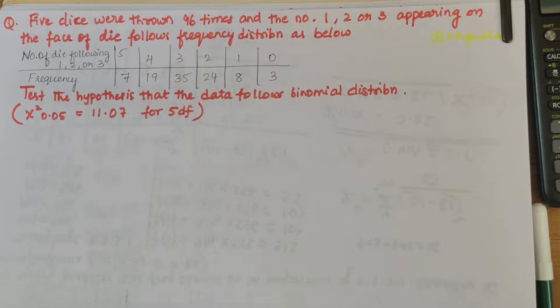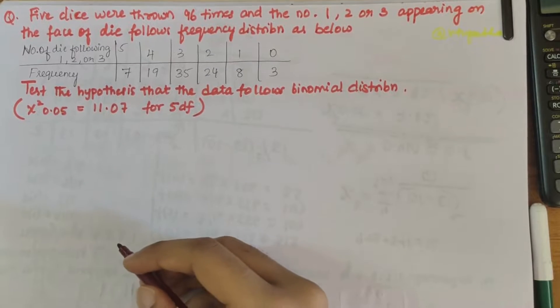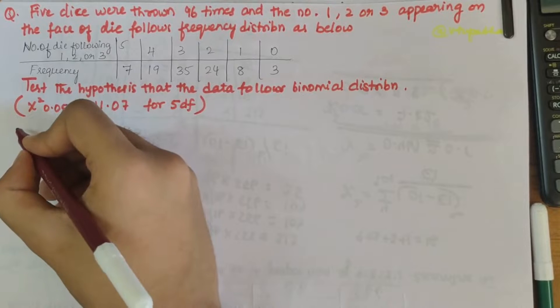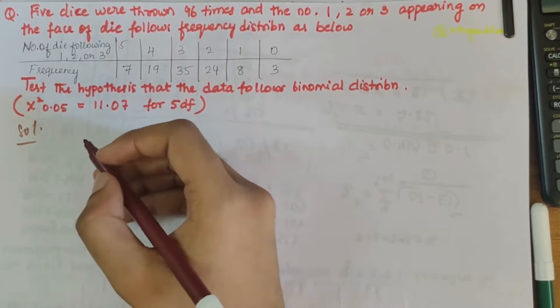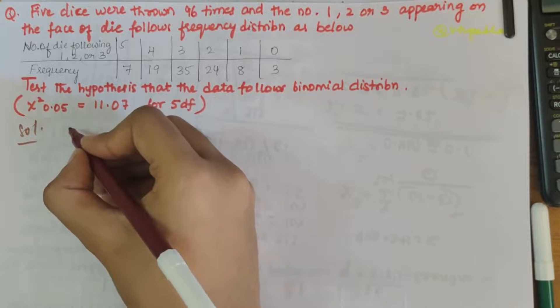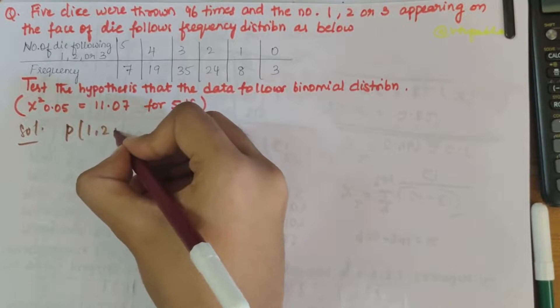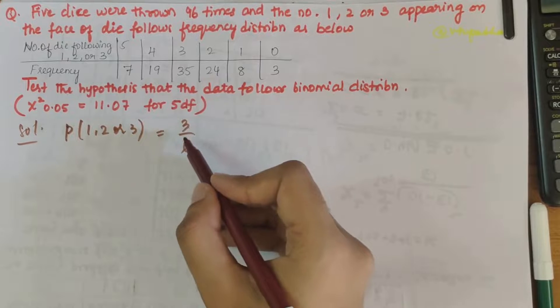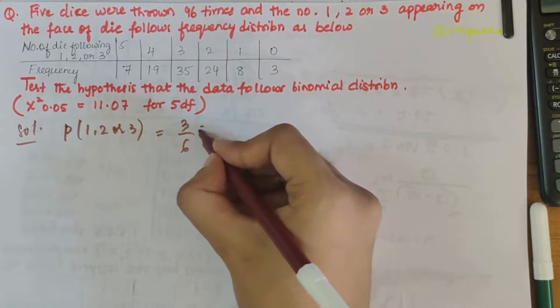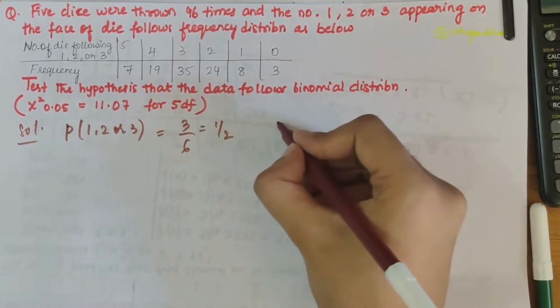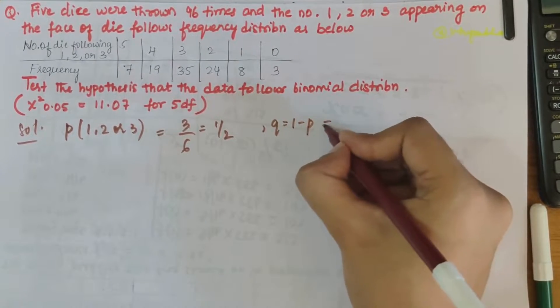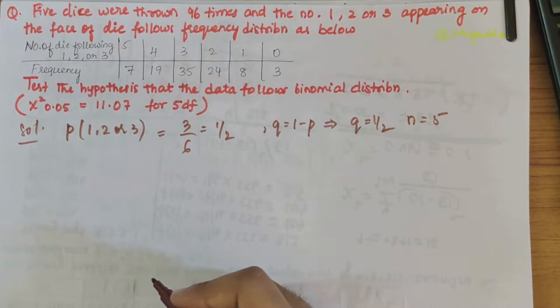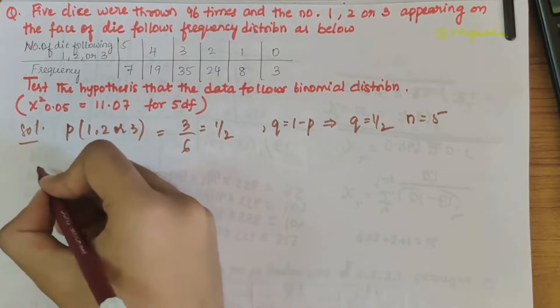We have to test the hypothesis that the data follows binomial distribution. The data given here is observed frequencies and we need to calculate the expected frequencies. The probability of a single die throwing 1, 2, or 3 is equal to 3 by 6, which is 1 by 2. When p value is 1 by 2, we know that q is 1 minus p, so q is also 1 by 2, and n value is 5.